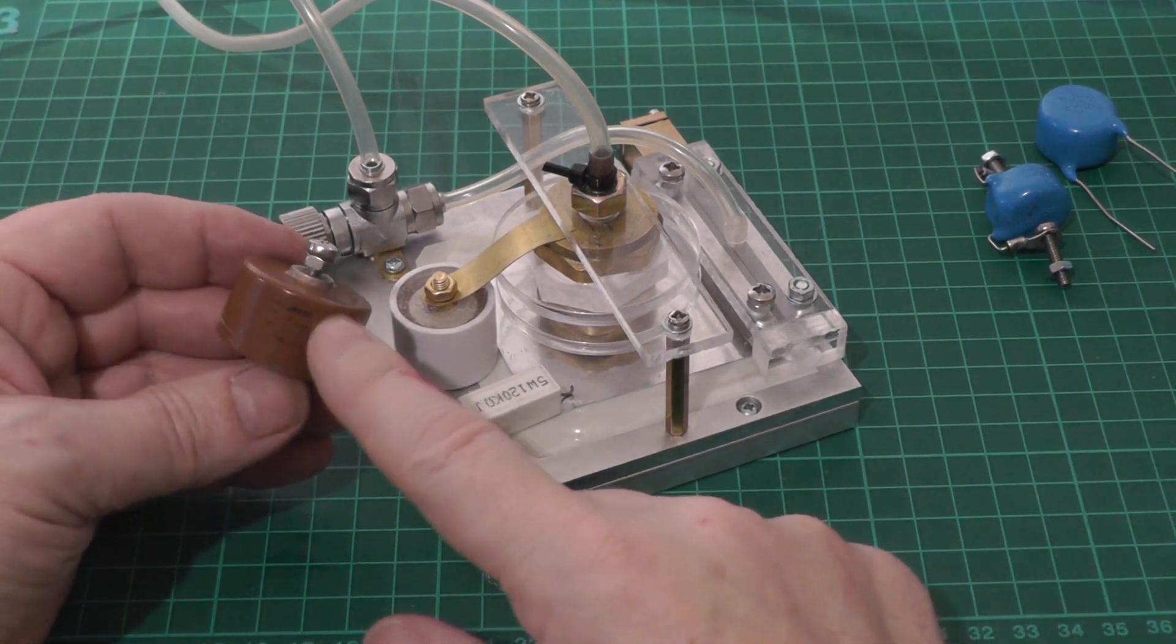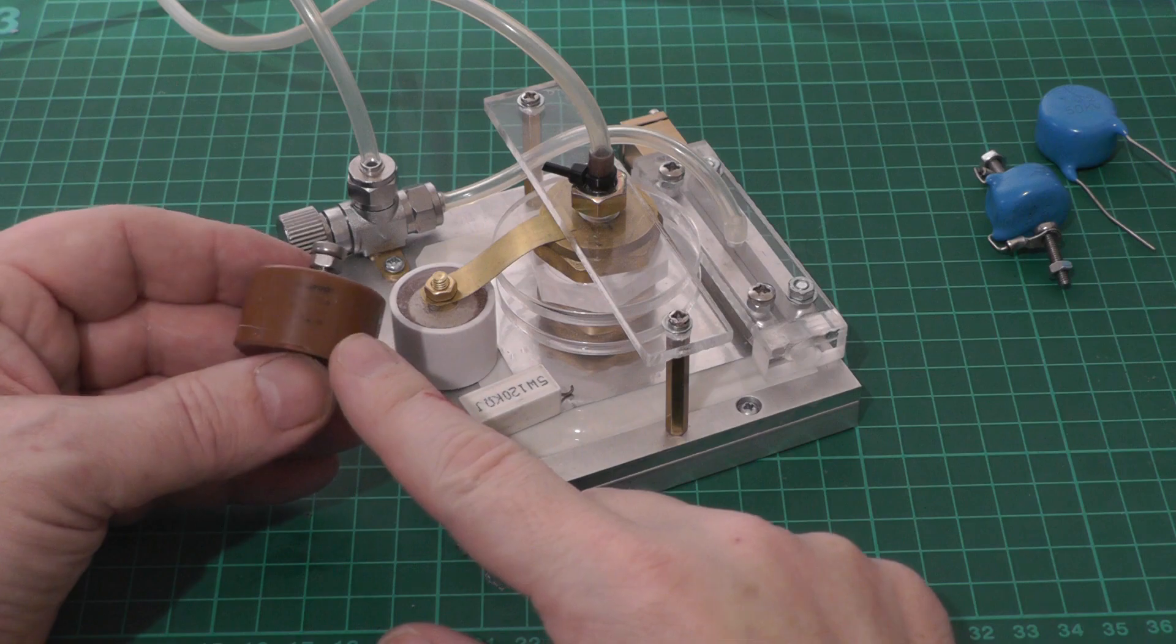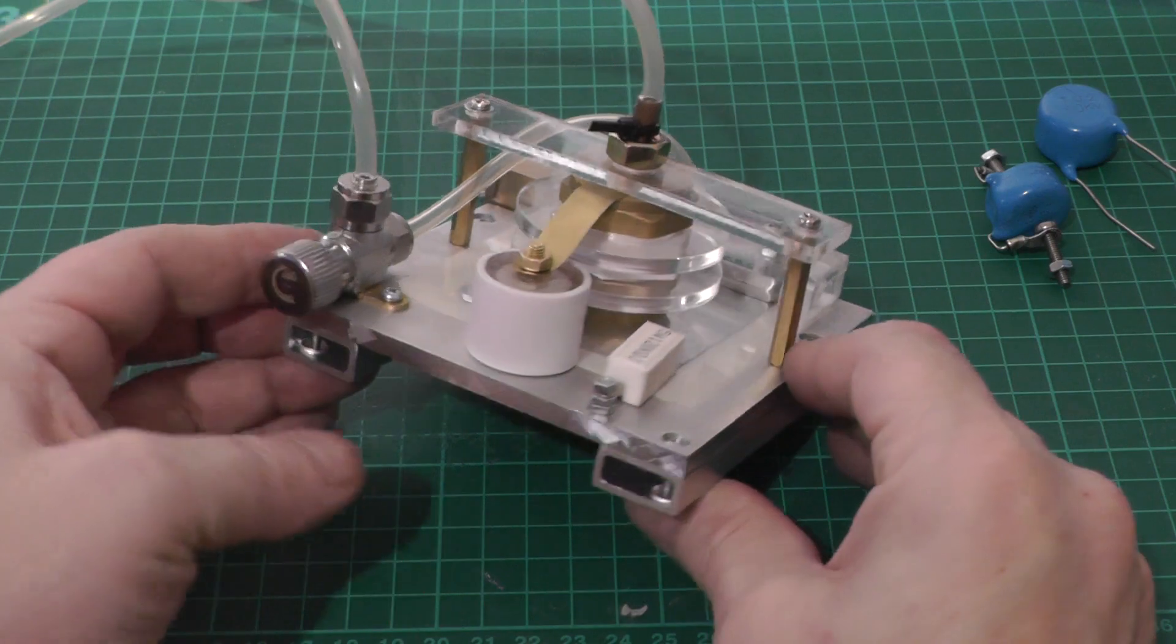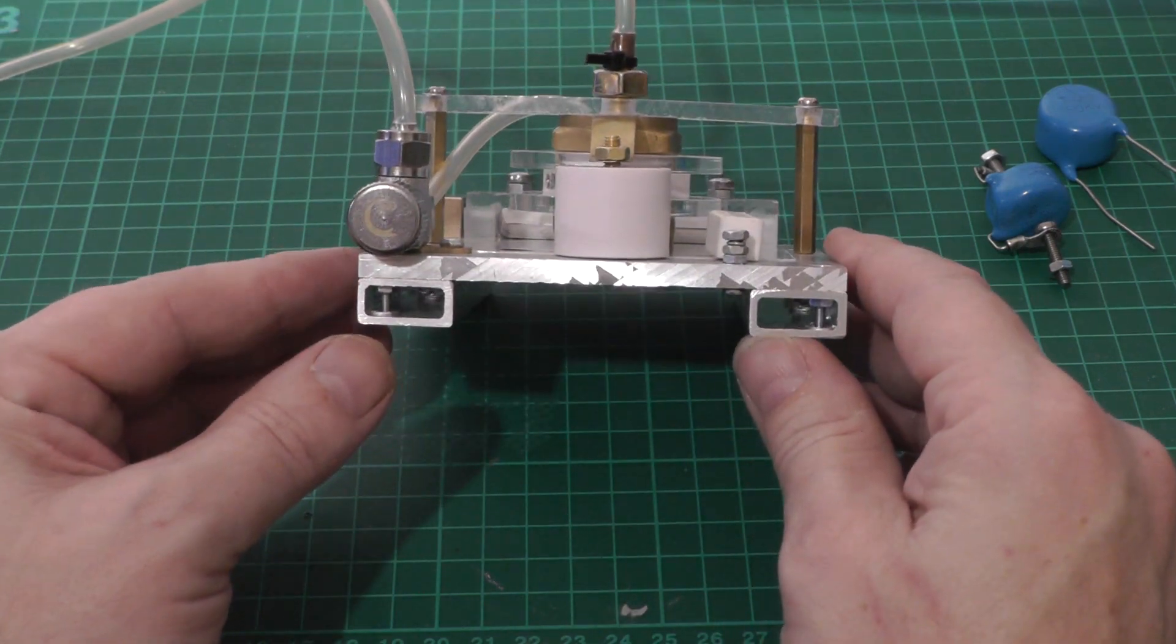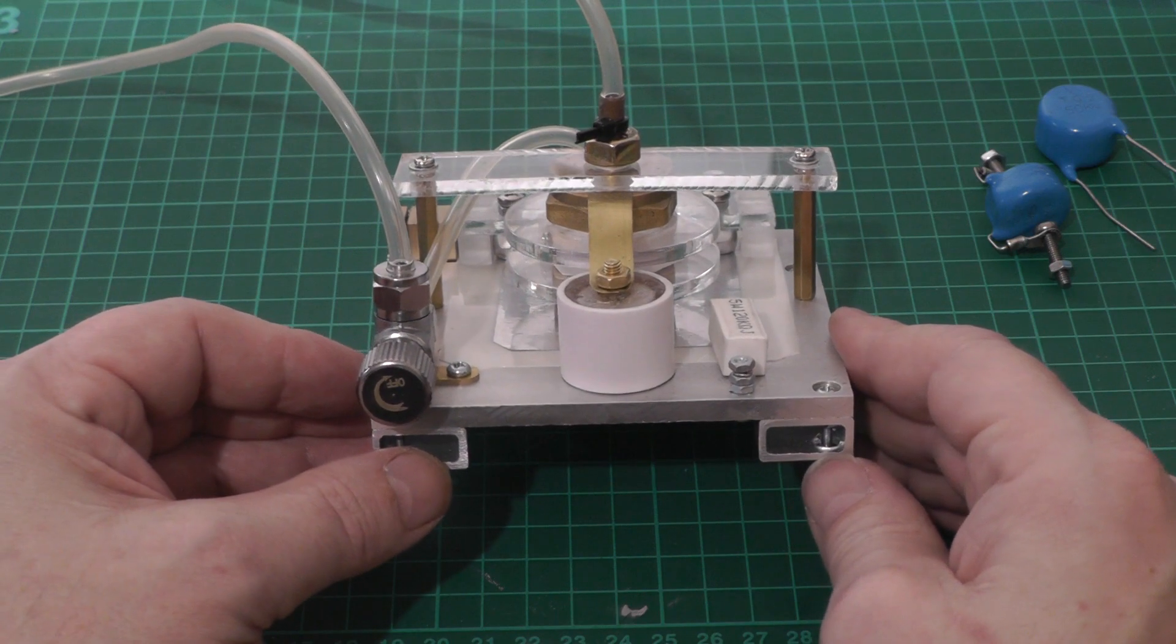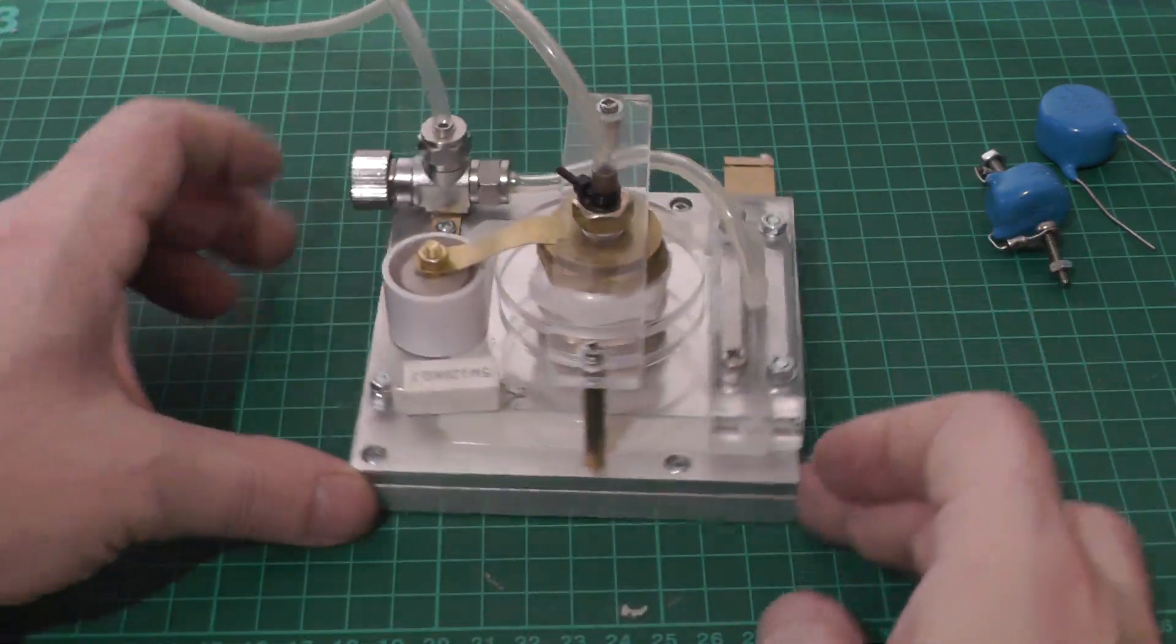So I've just taken the original doorknob capacitor out of my homemade miniature nitrogen laser and replaced it with our homemade doorknob capacitor. It's quite a bit smaller than the original, but I'm confident it'll stand off 20, 25,000 volts without too much in the way of issues.